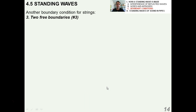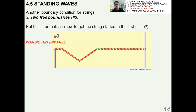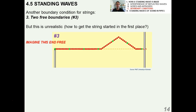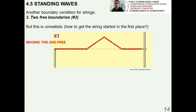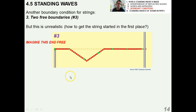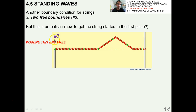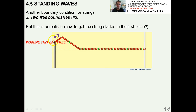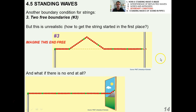There's another boundary condition — if you had two free boundaries — but this is kind of unrealistic. I mean, how would you get the string started in the first place? If you imagine this end being free, I guess it would go up and down. You'd have a pole with a ring on this side, but it's a bit unrealistic.